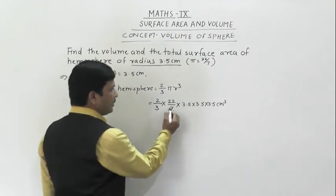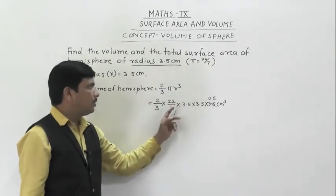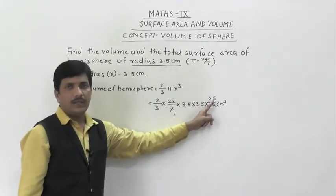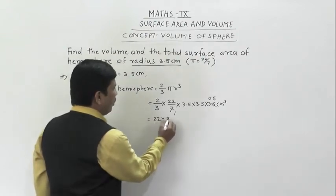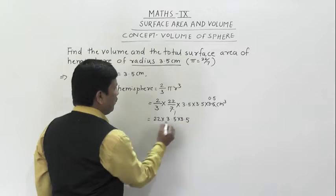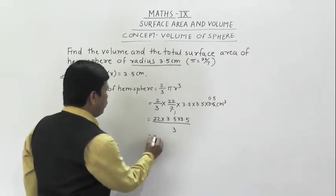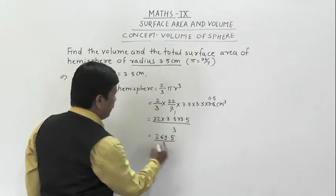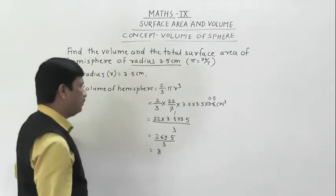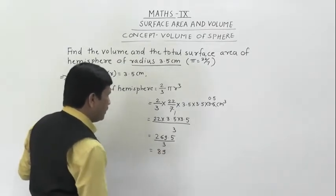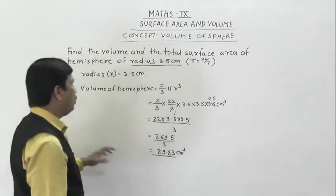Volume of hemisphere = (2/3)πR³, which is half the volume of a sphere. So that is (2/3) × (22/7) × 3.5 × 3.5 × 3.5. Simplifying: 3.5 = 7/2, so 7 cancels. Computing: 22 × 3.5 × 3.5 / 3 = 269.5 / 3 ≈ 89.83 cm³. This is the volume of the hemisphere.